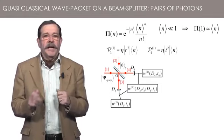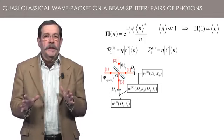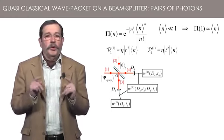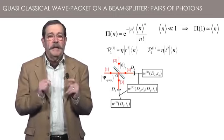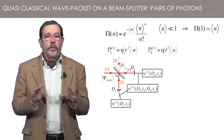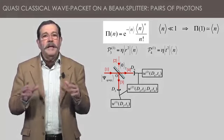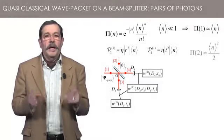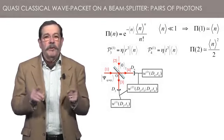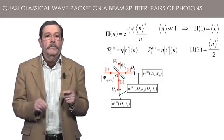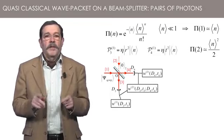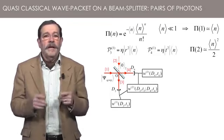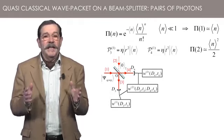Let us now address the case of double detection. They are possible, provided that there are two photons in the same wave packet at the input. According to the Poisson law, the probability to have a pair of photons is, at the lowest order, equal to the square of average of n divided by 2.